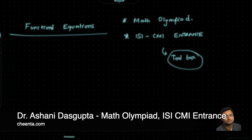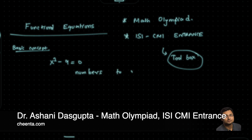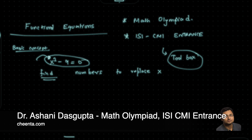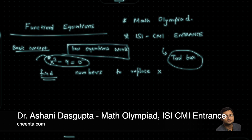So today, first let's talk about the basic concept. When we have an equation like x squared minus 9 equal to 0, we are looking for numbers to replace x — to find such numbers which, when replaced in the position of x, satisfy this equation. This is how normal equations work. The unknown quantity here is numbers.